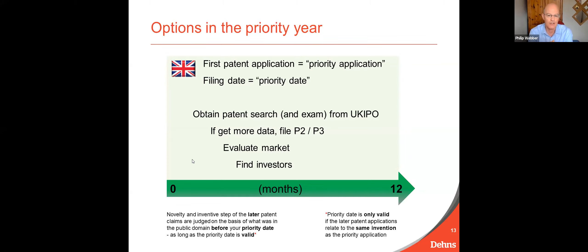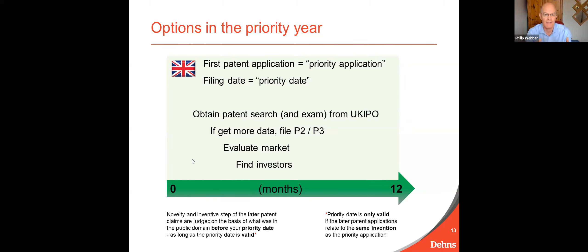You file your first patent application and you have 12 months to decide where you want to file other patent applications. This 12-month period has a number of advantages. In the UK at least, if you file at the UK patent office you can request a search and examination from a UK patent office examiner. Within this 12-month period you can get a search report and examination report which judges whether your claims are novel and inventive. So you get a good early indication from the patent office as to whether you're likely to get patents granted in other countries.